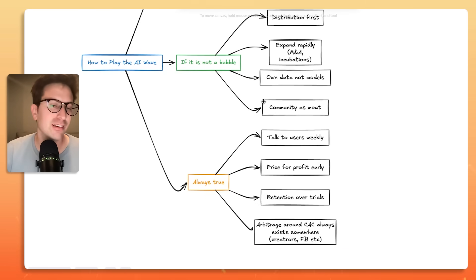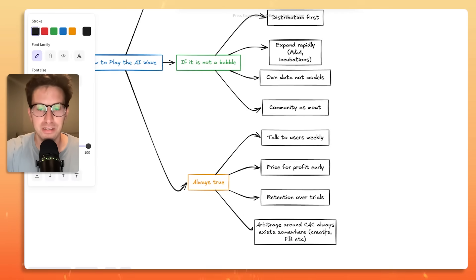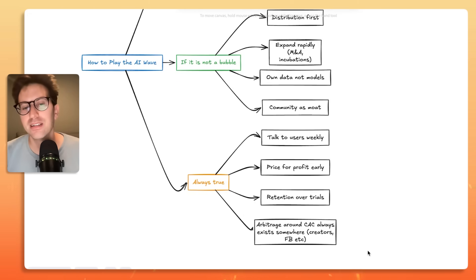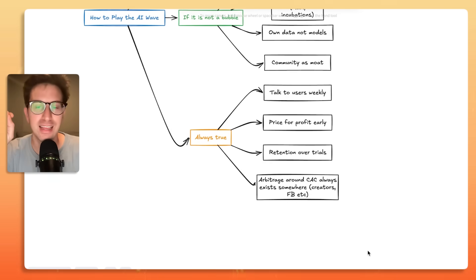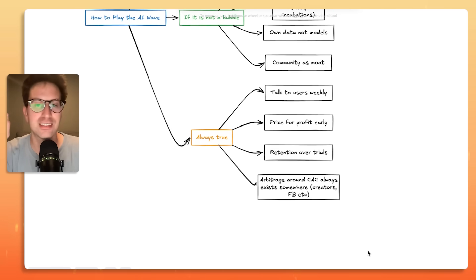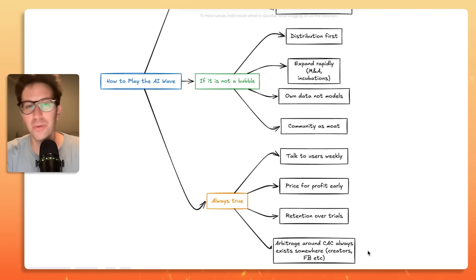What is always true is you're going to, no matter if you think it's a bubble or not, you're going to want to talk to users weekly. You're going to price for profit early, retention over trials, retention is everything. And then remember that there's always an arbitrage around CAC, meaning, no matter if it is a bubble or it isn't a bubble, there is some way, some channel, some messaging, some creative that through paid ads, you can get a low enough CAC to get your business profitable customers. Now, the hard part is figuring out what channel that is, and what creative that is, and what messaging it is, and what positioning that is. But it's always going to be true.